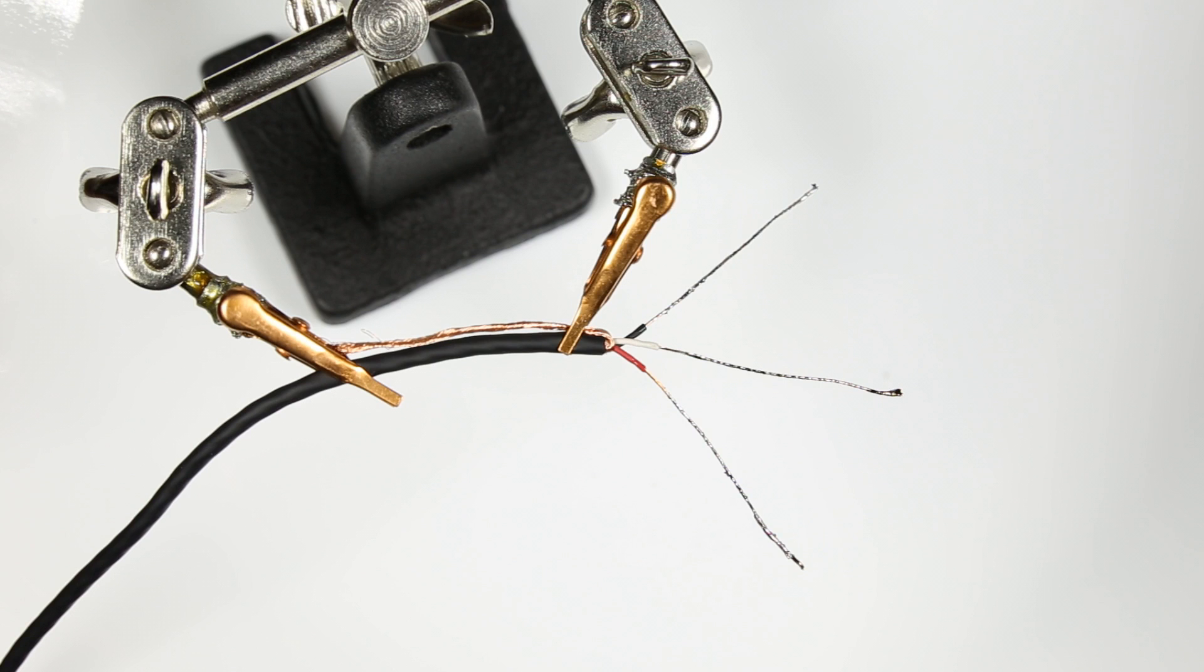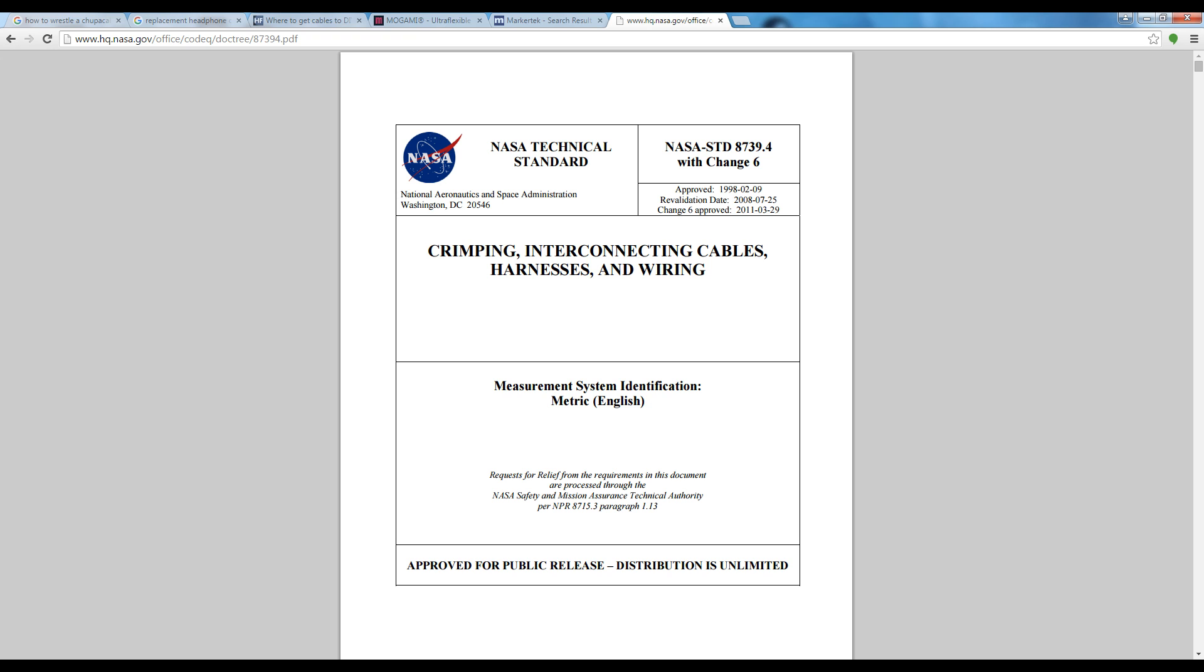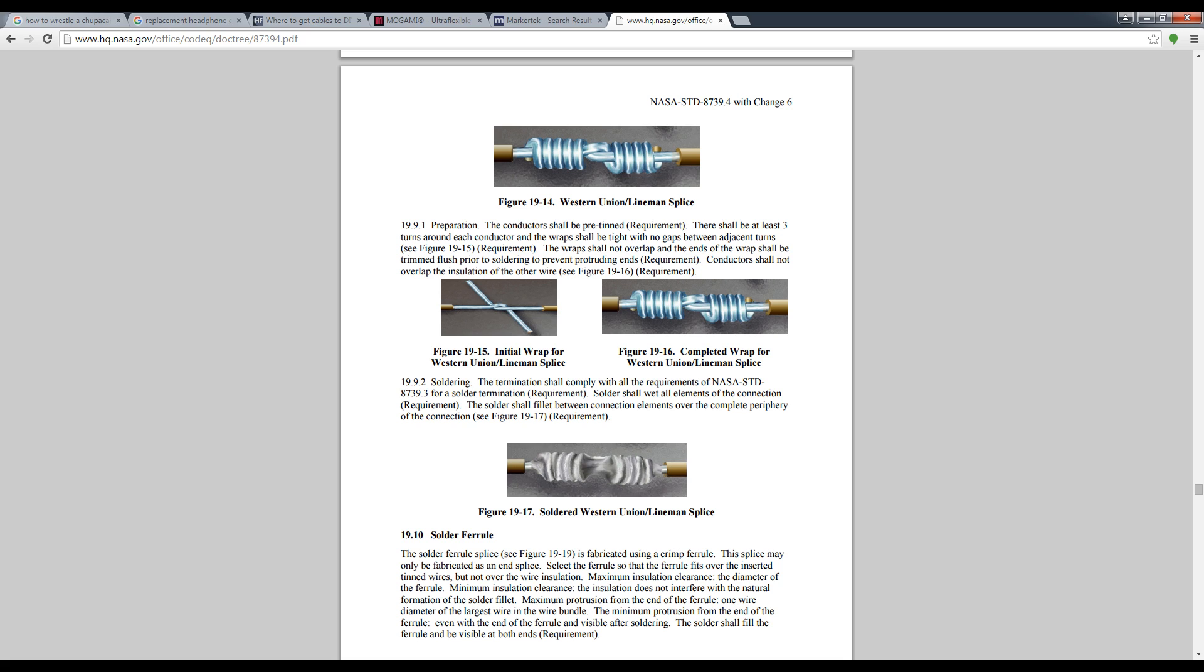For this we turn to our friends at NASA. They show us the proper way to do what's called the lineman splice. With a lineman splice you wrap the wires around themselves for strength. When you do it properly, the joint is stronger than the wire itself.